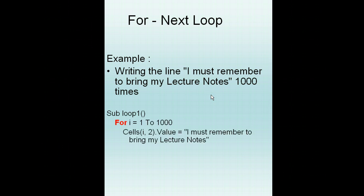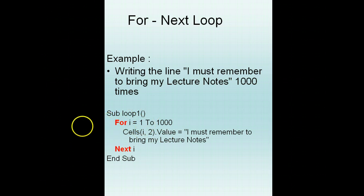What you can do is declare a method and use the for-next structure. For i — now i is just like a counter variable where it counts how many times you have iterated. So for i equal to 1 to 1000, each time between that I will do this.